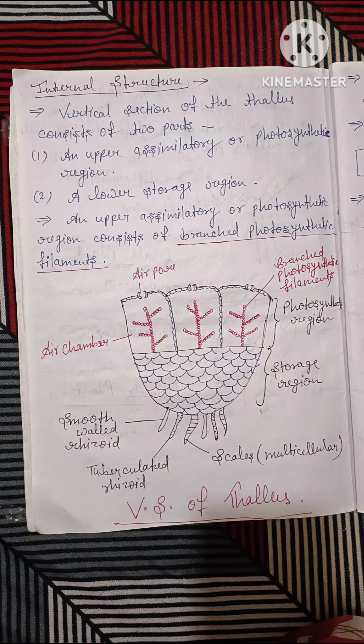Today we will discuss the internal structure of Marchantia. The vertical section of the thallus consists of two parts: the first is the upper assimilatory or photosynthetic region, and the second is the lower storage region. The upper assimilatory or photosynthetic region consists of branched photosynthetic filaments. Note that in Riccia the filaments are unbranched, but in Marchantia they are branched.